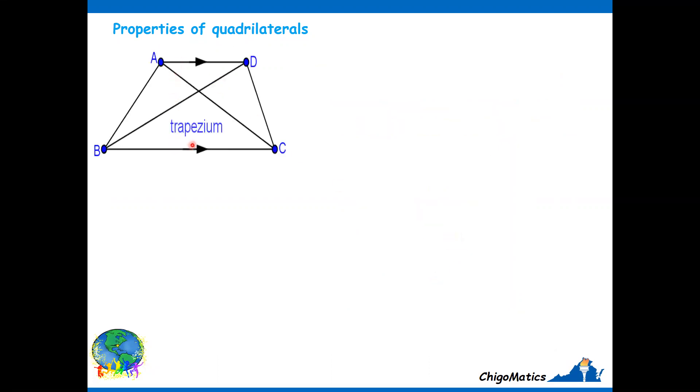Let's look at the trapezium. Trapezium has one pair of parallel sides. And the parallel sides are what you refer to as the bases. AD and BC are the bases of the trapezium.